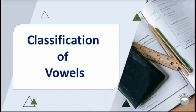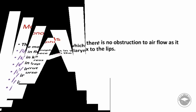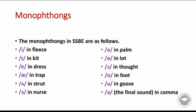Hi everyone, welcome to this lesson: Classification of Vowels. Vowels are sounds in which there is no obstruction to airflow as it passes freely from the larynx to the lips. We have two sets of vowels: monophthongs and diphthongs — these are the sounds we produce without any obstruction to the airflow.